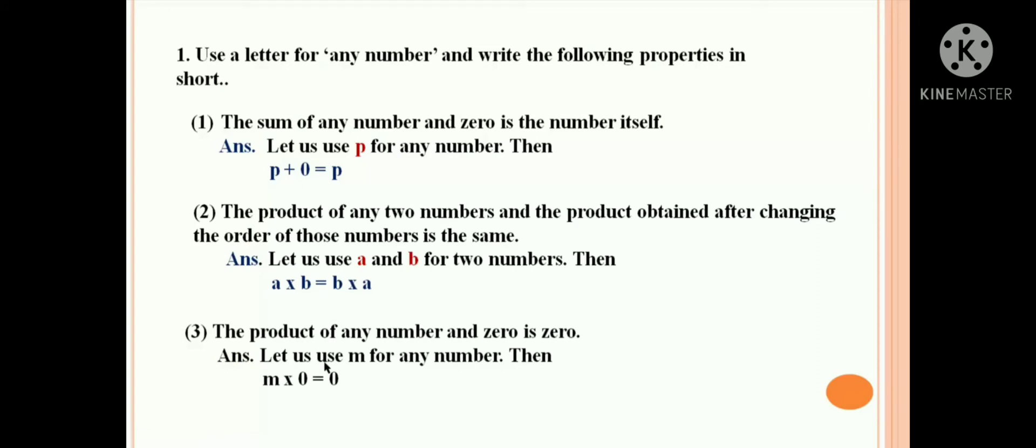The third question: the product of any number and 0 is 0. So what is your answer? Let us use M for any number. Then M into 0 is equal to 0.